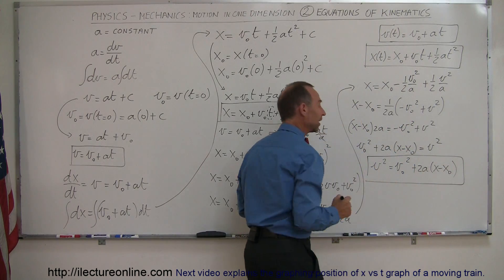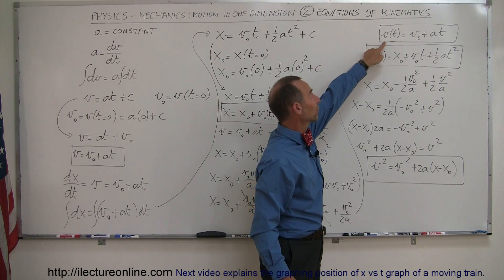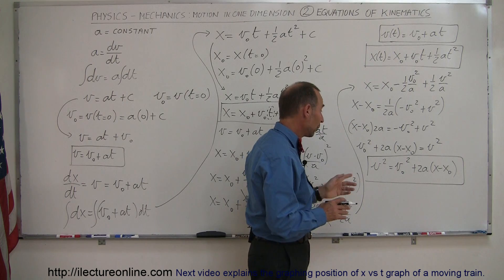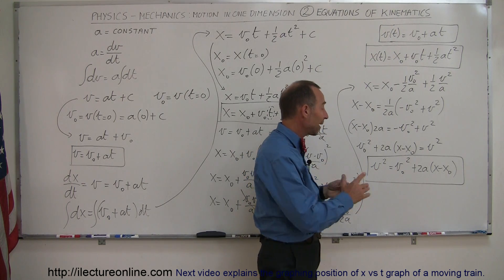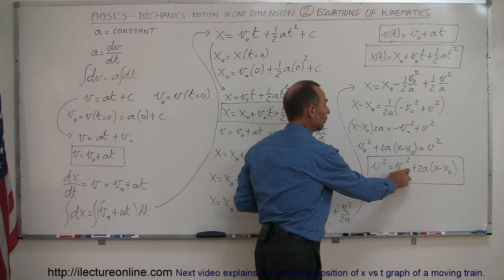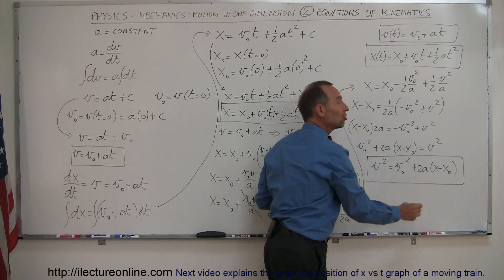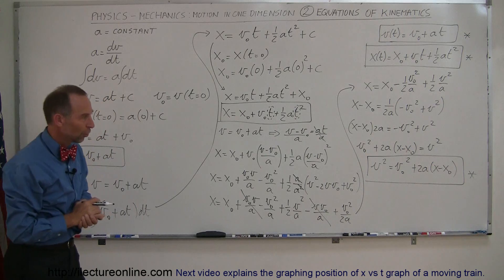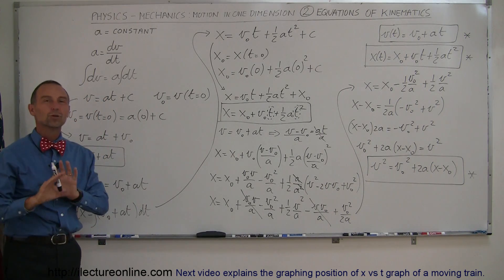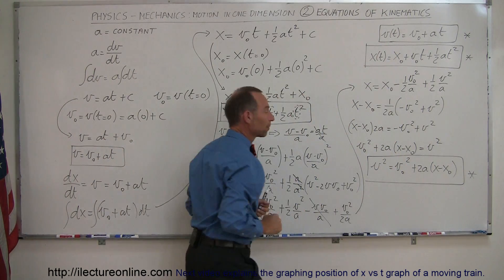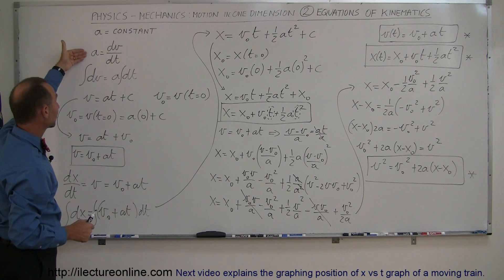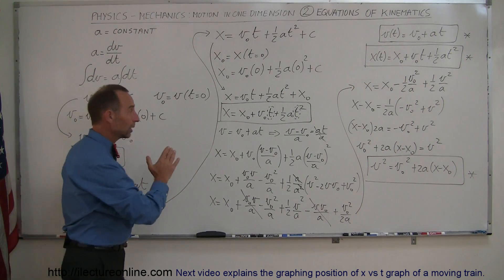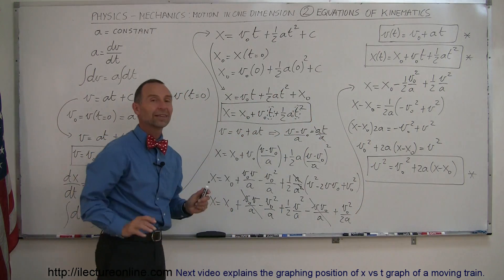We now have all three equations of kinematics. Equation 1 defines velocity as a function of time. Equation 2 defines position as a function of time. Equation 3 gives v² equals v-naught² plus 2a·Δx, which does not involve time — very useful when time is unknown. If you didn't follow the calculus derivation, no problem — just remember these three equations. If you do know calculus, you can see how the definitions of acceleration and velocity led to the first two equations, which when combined to eliminate time yield the third.